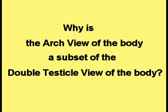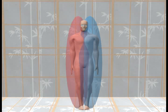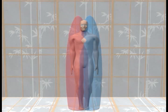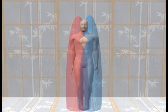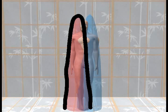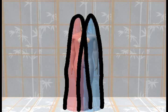Why is the arch view of the body a subset of the double testicle view of the body? The process to demonstrate this is very simple. Here is the man with the double testicles superimposed on his body. Both testicles are then stretched downwards until their origination point is located on the ground. Next, a line is drawn following the outline of each testicle. The result is two arches.